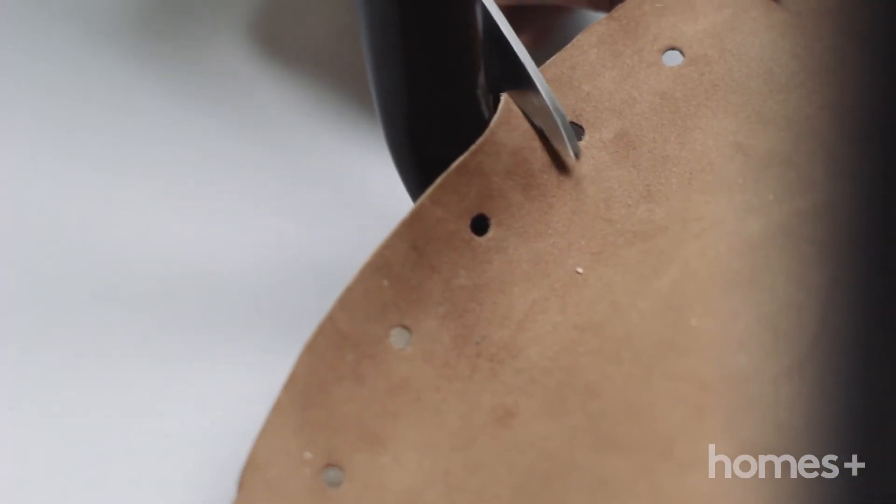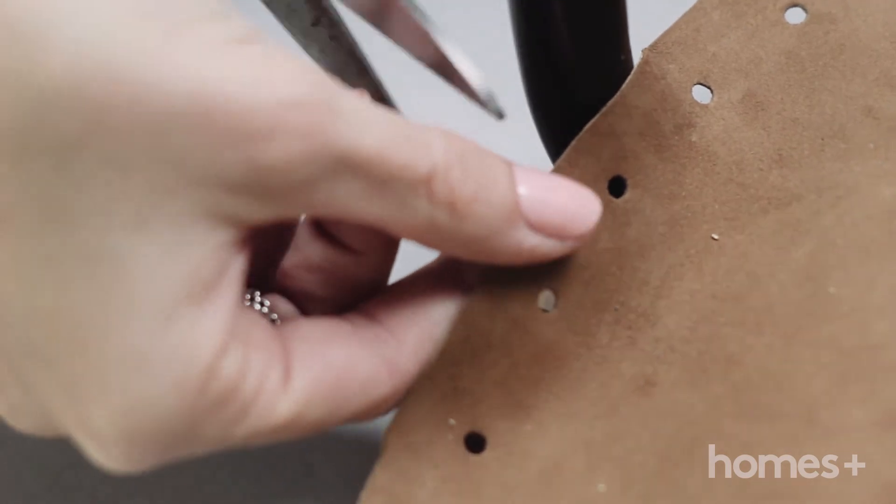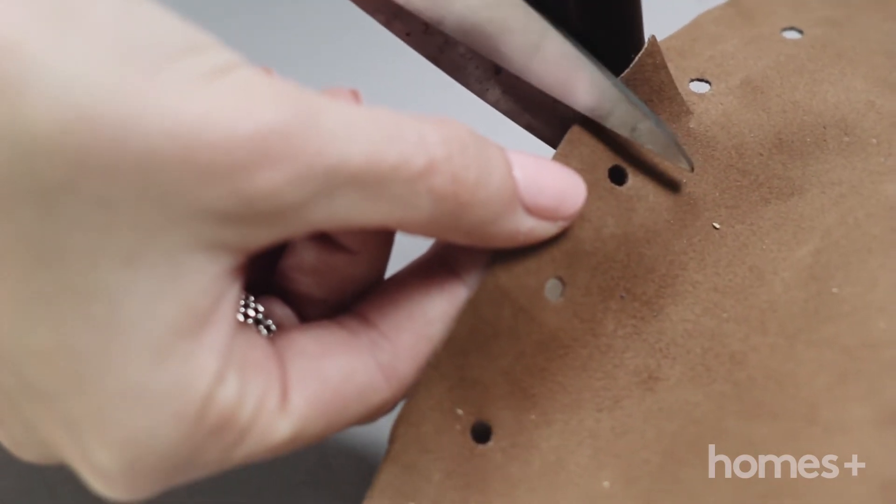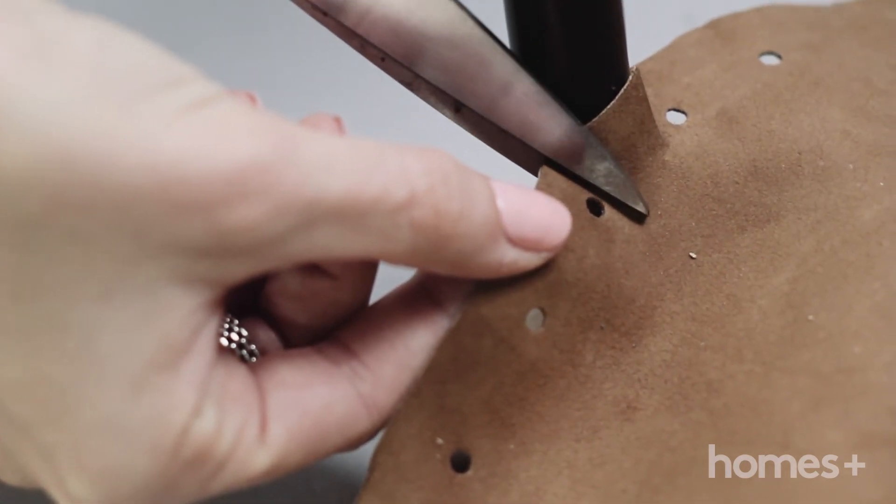Step 6: Cut out a notch at each leg approximately 2 centimeters long and then across. Be careful not to cut out any of the holes.